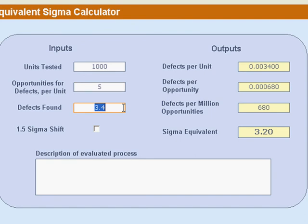And let's say that in those 1,000 units with 5 opportunities each, I found 4 defects. I would then find that I've got 0.003 defects per unit, DPU. That's a useful number.